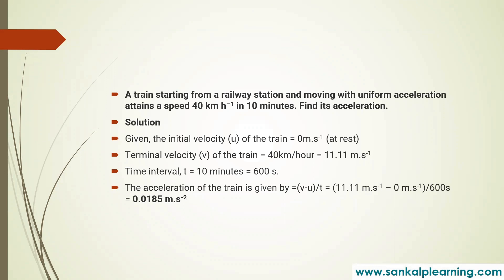The acceleration of the train is given by V minus U divided by T. So that is 11.11 minus 0 divided by 600. Simplifying, we get 0.0185 meter per second square. This is the acceleration value.